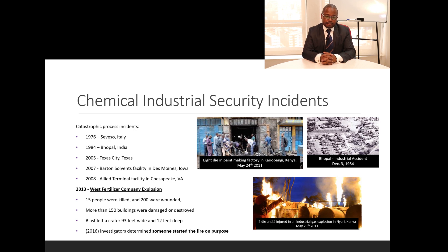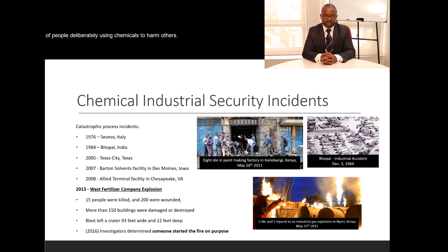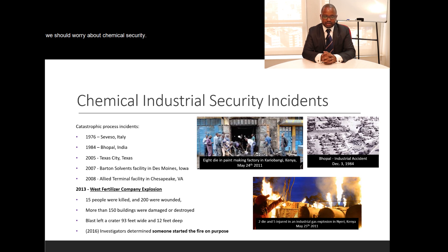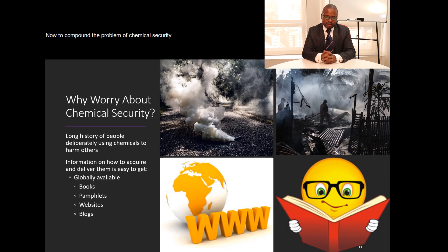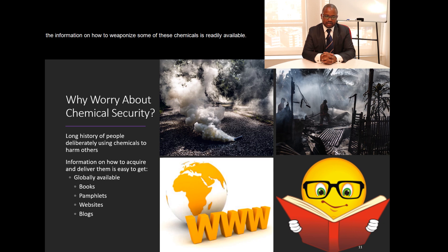Chemical security is also important for us to think about, because there is a history of people deliberately using chemicals to harm others. Whether it is in world wars or regionally confined uses of chemicals to harm others, these are well documented. Therefore, as users of chemicals, we should worry about chemical security. Compounding the problem of chemical security is the availability of information — on websites, on books, on blogs — on how to weaponize some of these chemicals, making it easier for people with ulterior motives to make weapons using readily available chemicals.